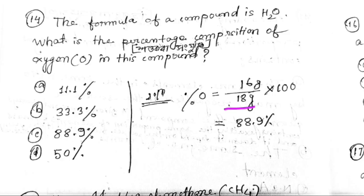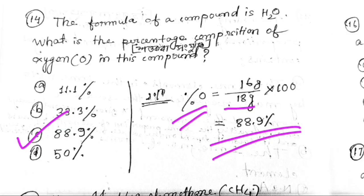The amount of oxygen in the compound is calculated. The amount of oxygen is equal to 67 grams, and the number for oxygen is correct.